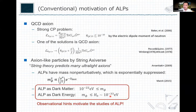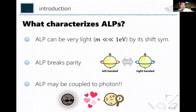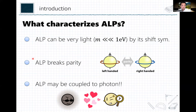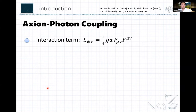Axion or axion-like particles are very popular now in cosmology. What characterizes them? First, axion-like particles can be extremely light — much lighter than one electron volt. Second, since it's a pseudo-scalar field, it plays parity symmetry. If the axion-like particle is involved, physics differentiates left-handed and right-handed modes.